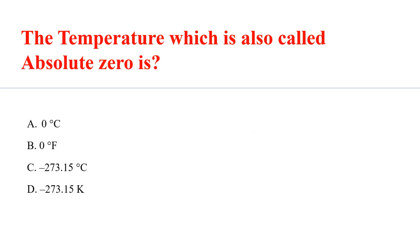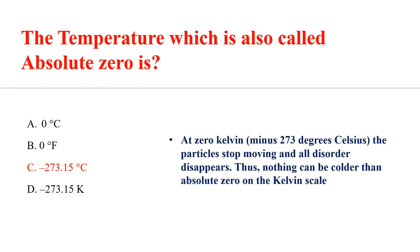The temperature which is also called absolute zero is minus 273.15 degrees Celsius. At zero Kelvin, which means minus 273 degrees Celsius, the particles stop moving and all disorder disappears. Thus nothing can be colder than absolute zero on the Kelvin scale.